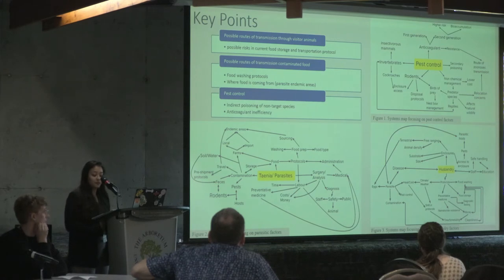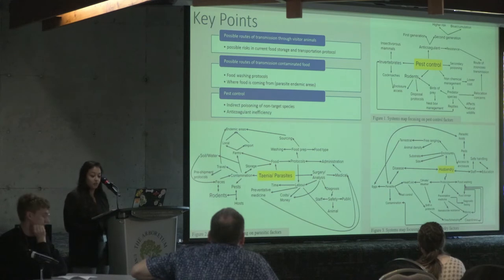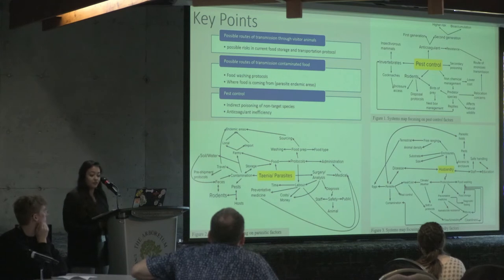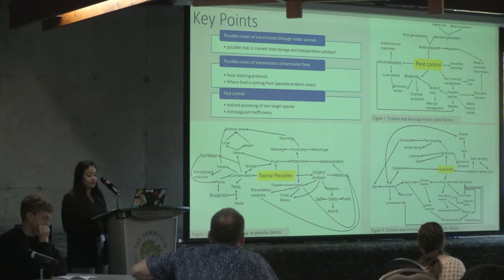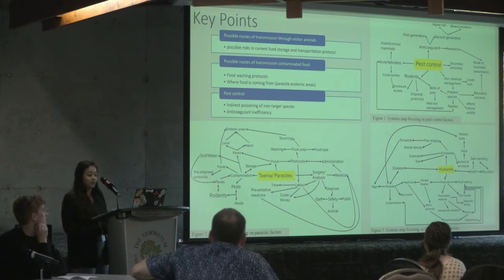Current literature also suggests food preparations such as washing produce can be another route of zoonosis transmission that should be investigated. The next steps for this research are to create a final systems map outlining these observed risks and complete a gap analysis that can be presented to the Toronto Zoo to help illustrate the risks and routes of transmission that were recorded during observation.